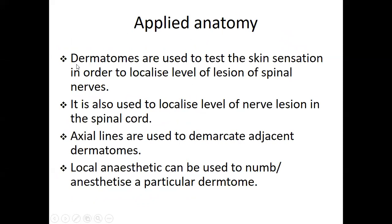For the applied anatomy of dermatome: dermatomes are used to test skin sensation in order to localize the level of lesions of the spinal nerve. It is also used to localize the level of nerve lesions in the spinal cord. Axial lines are used to demarcate adjacent dermatomes. Local anesthetic can be used to numb or anesthetize a particular dermatome.